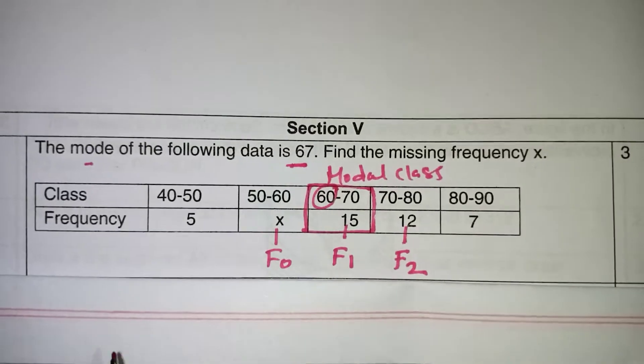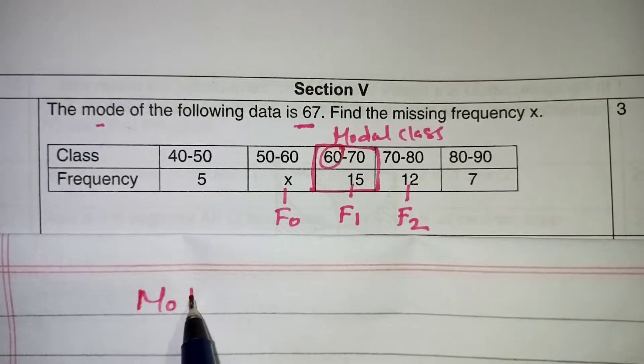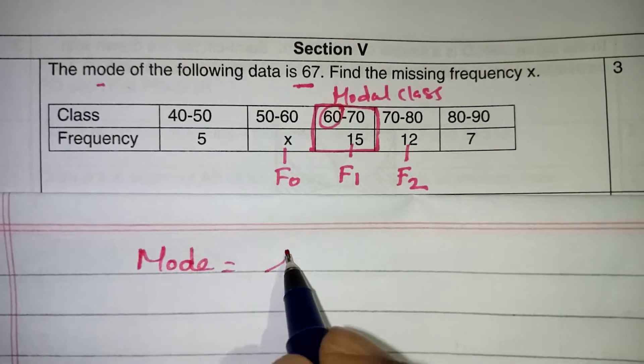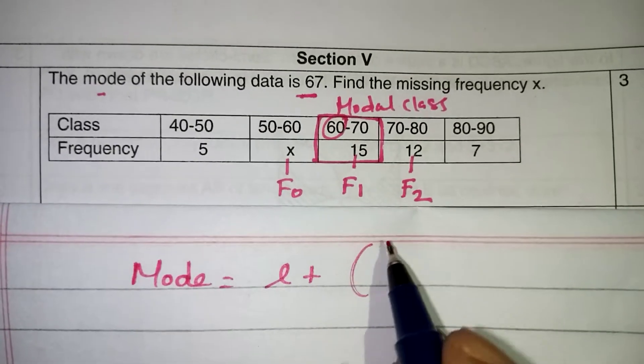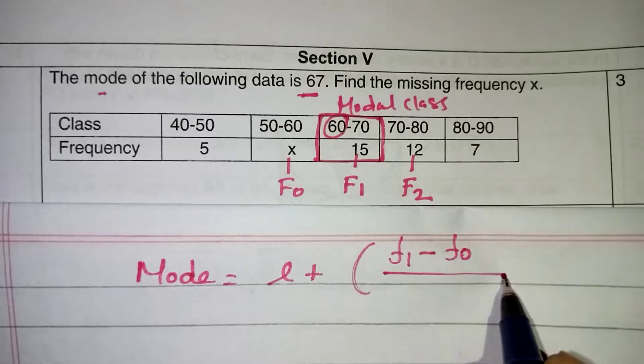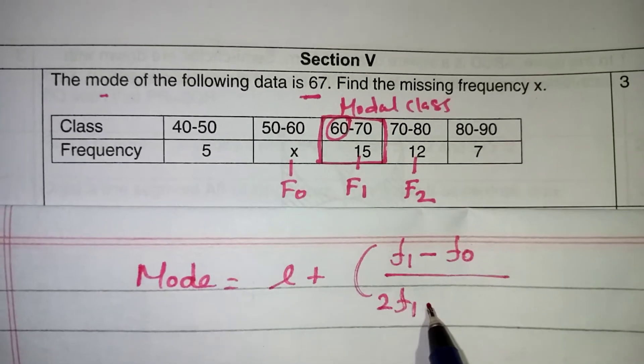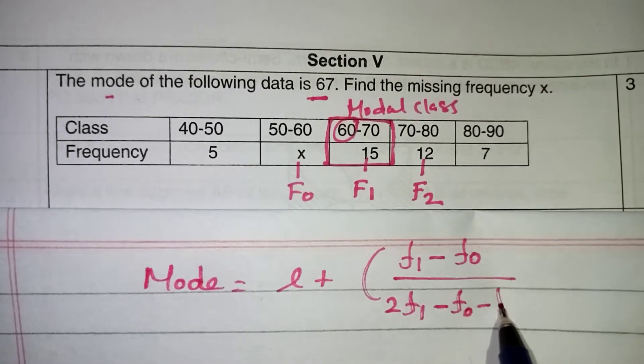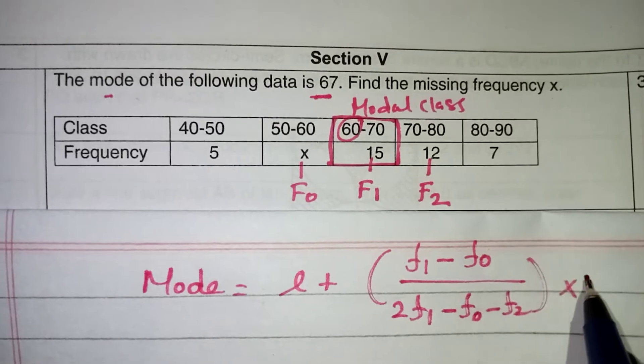Now after taking everything, let's apply the formula now. Mode is equal to L plus F1 minus F0 by 2 times F1 minus F0 minus F2 into H. This is your formula.